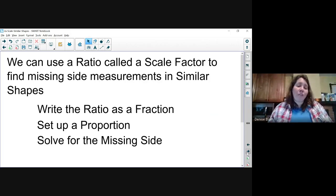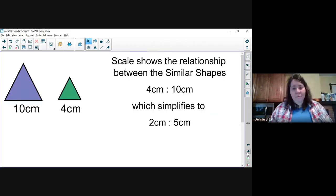First, we write the ratio as a fraction. Then we set up a proportion. Finally, we solve for the missing side. Here we have two triangles. The scale shows the relationship between the similar shapes.